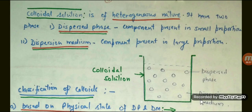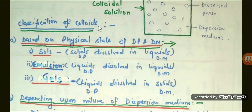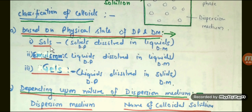Next is classification of colloids. First is based on the physical state of disperse phase and dispersion medium. We have three types. One is sols. Sols are solids dissolved in liquid. The disperse phase is present in the solid state and the dispersion medium is present in the liquid state.